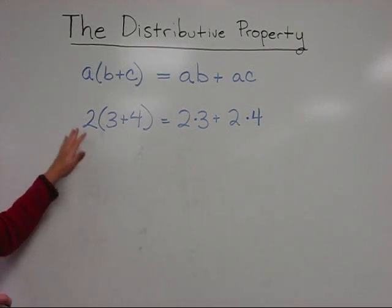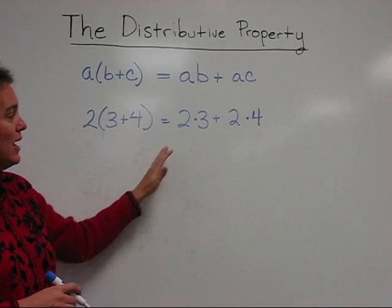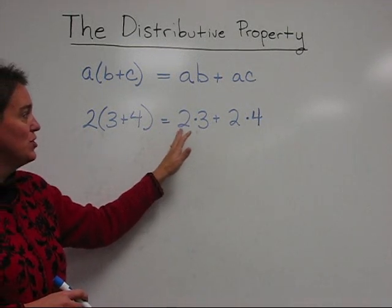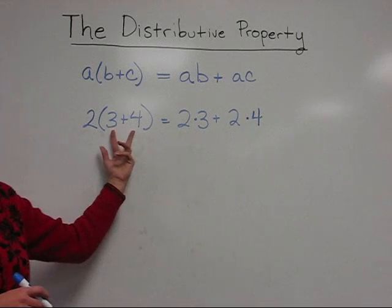Looking at this in a way that's a little bit less abstract, let's consider 2 times 3 plus 4, and see if that really is equal to 2 times 3 plus 2 times 4, where the 2 has been handed out to both terms in the parentheses.